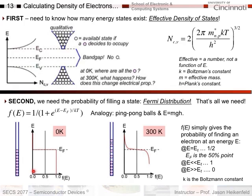A key point to remember throughout this course is that the Fermi energy is the point at which we have a 50% chance to find an electron — or a ping-pong ball in this analogy. So if I have 100% chance below and 0% chance above, the 50% chance point is right between them.